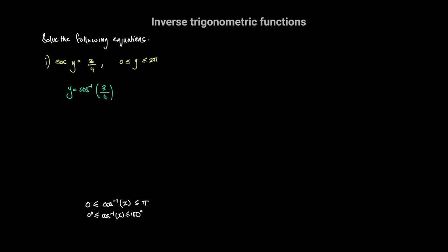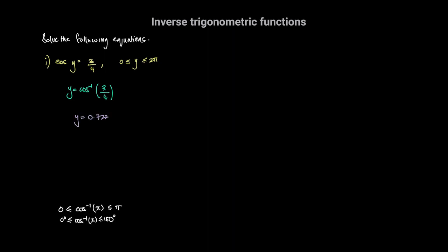The inverse cosine function will always return a value for the angle between 0 and pi radians, or between 0 degrees and 180 degrees. Here we want to determine all the possible values of y in terms of radians. So if we set our calculators to radian mode and take the cosine inverse of 3 over 4, we get y is equal to 0.722 radians.